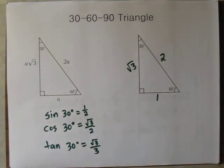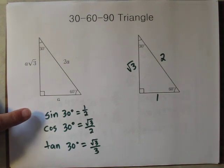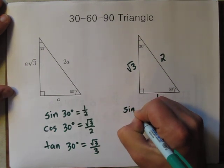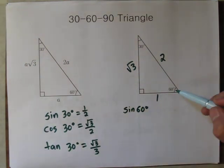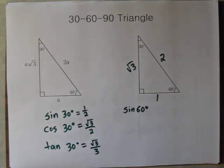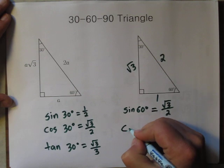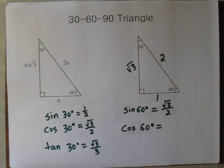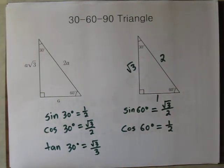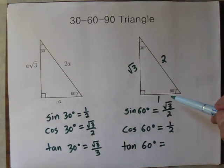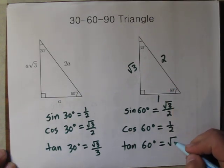What's neat about the 30-60-90 triangle is that not only can we evaluate the trigonometric functions at 30 degrees, we can evaluate them at 60 degrees as well. Sine 60 degrees: opposite 60 degrees is √3, and the hypotenuse is 2, so sine 60 degrees is √3 over 2. Cosine 60 degrees would be adjacent over hypotenuse, which is 1 half. And tangent of 60 degrees would be opposite over adjacent, which is √3 over 1 — so just √3.